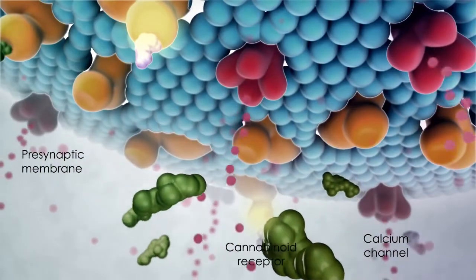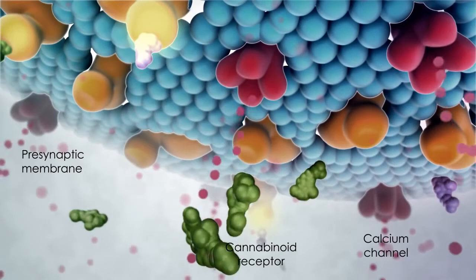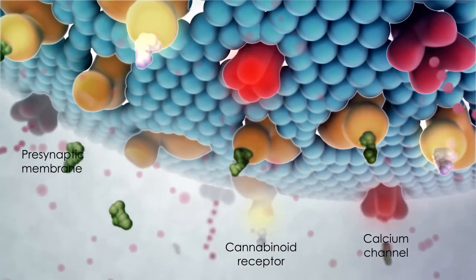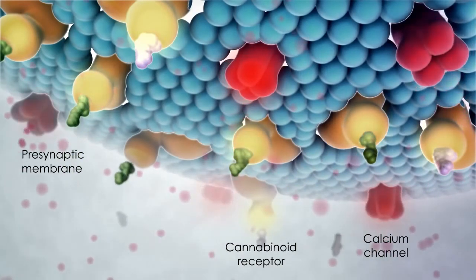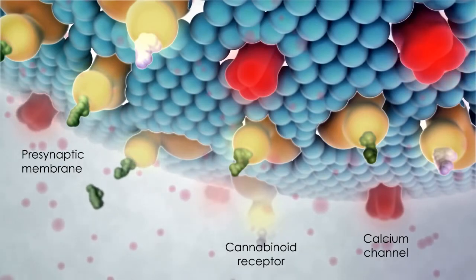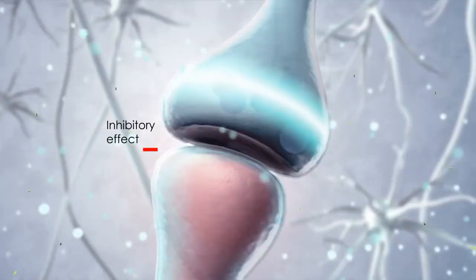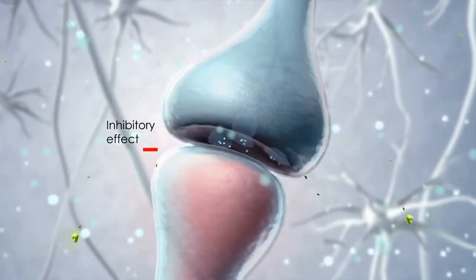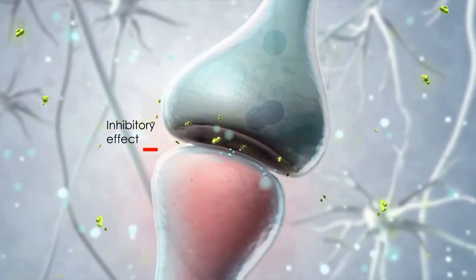Exogenous cannabinoids from the bloodstream bind to cannabinoid receptors on the presynaptic neuron and mimic the endogenous synaptic modulatory effect by decreasing influx of calcium ions. In this way, pain and other neural processes are modulated.